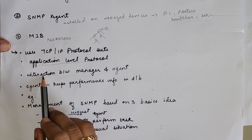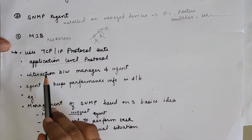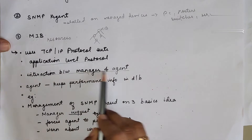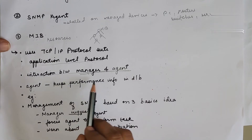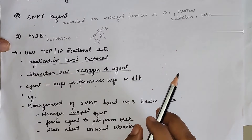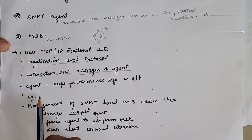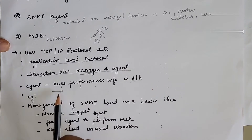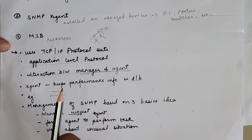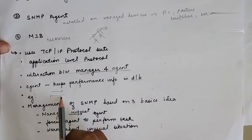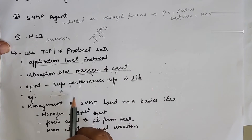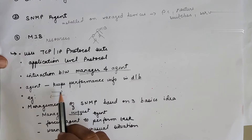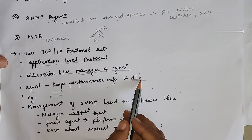This management is achieved through simple interaction between the manager and the agent. The agent keeps performance information in a particular database — for example, a router can store how many packets are being sent, forwarded, or received — so that the manager can fetch this information and compare values to check whether there is any kind of congestion or traffic in the router.